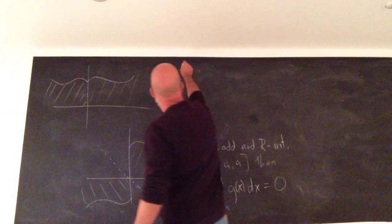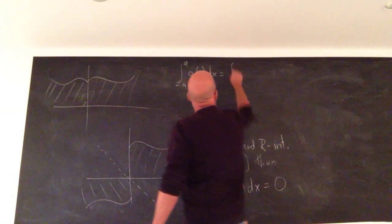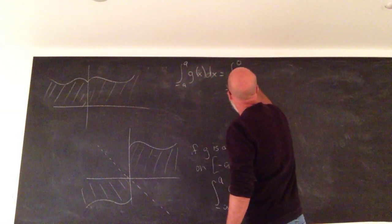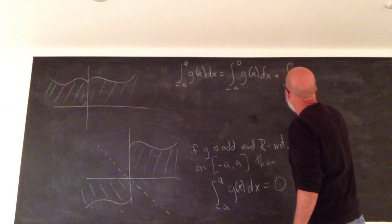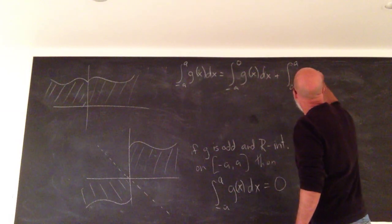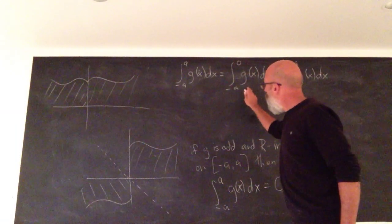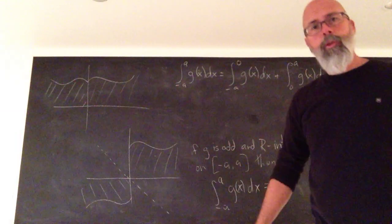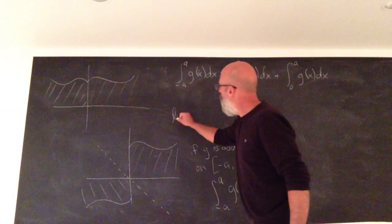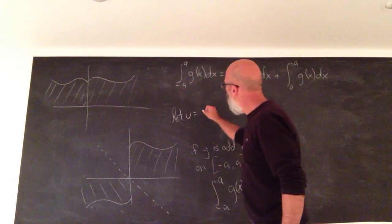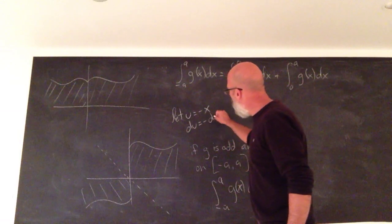So the integral from negative A to A is the integral from negative A to 0 plus the integral from 0 to A. On the first integral, you're going to make a U-substitution. Let U be negative X, so that dU is negative dX.